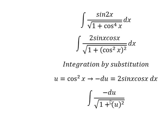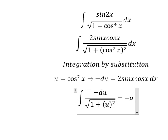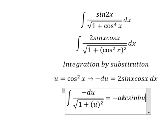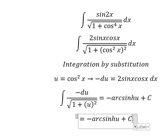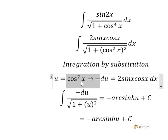The integration gives us -arcsinh(u) + C. For u, that equals cos²x, giving us the final answer -arcsinh(cos²x) + C.